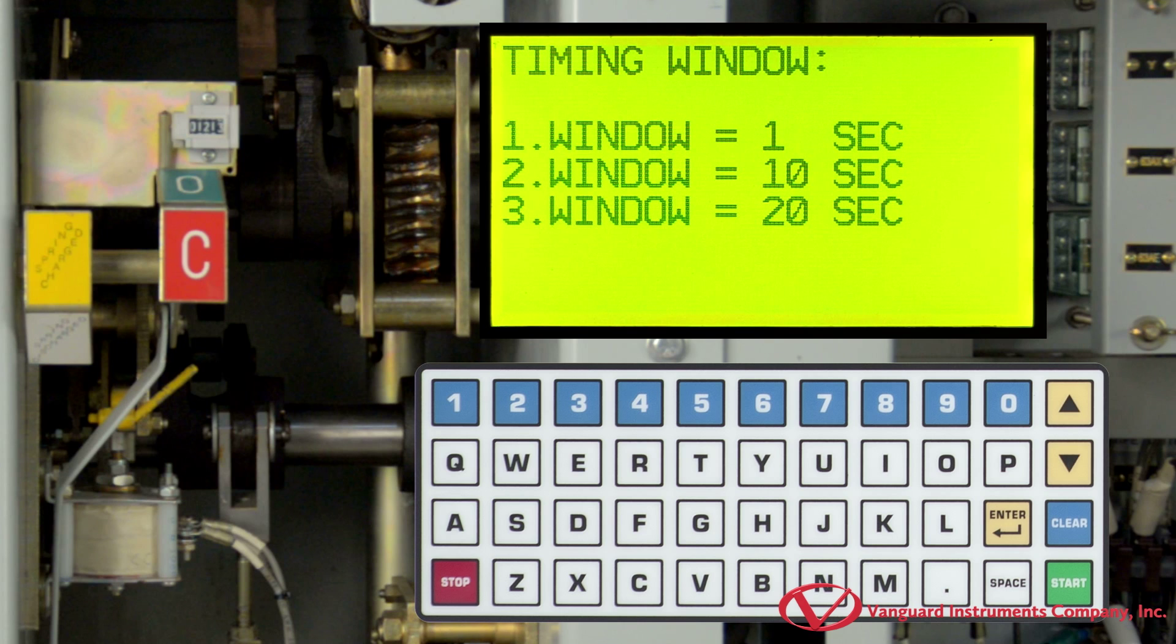On this screen, we will select the timing window. For this example, we will use a 1 second timing window by pressing the 1 key.